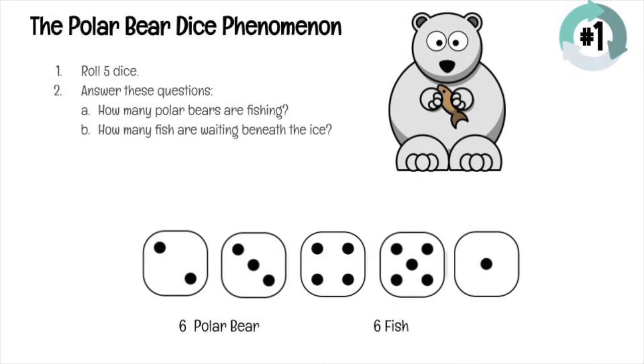How does each die represent a polar bear? And how does each die represent a fish? Go ahead and give it a try on your wipe-erase board or your Google Jam board. Draw the five die. Draw an arrow. Tell me what you think. Where are the fish in these die? And where are the polar bear in these die?